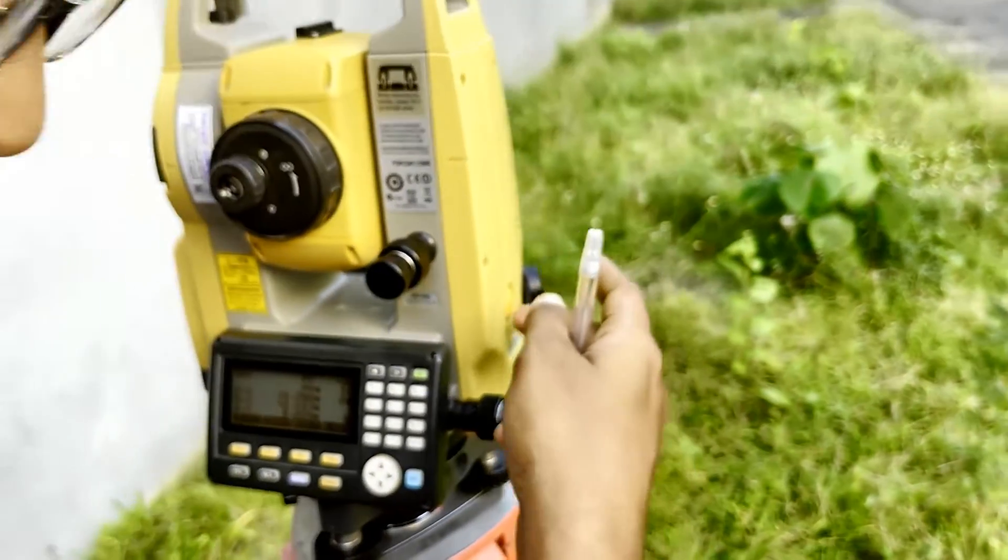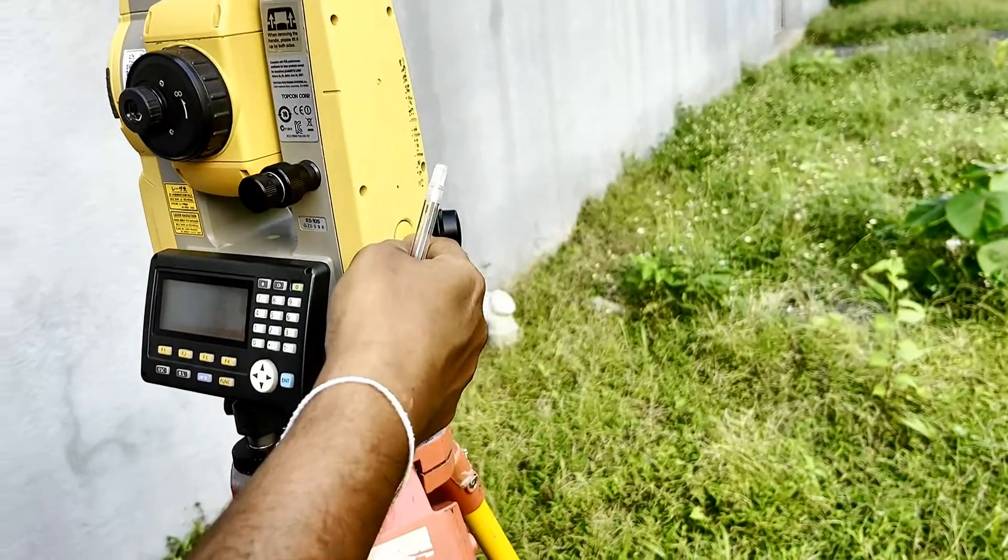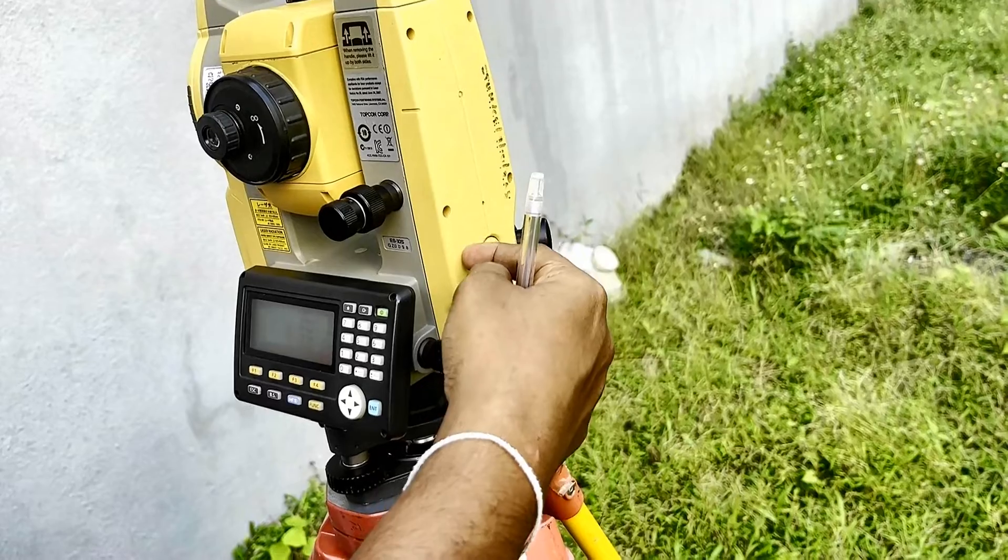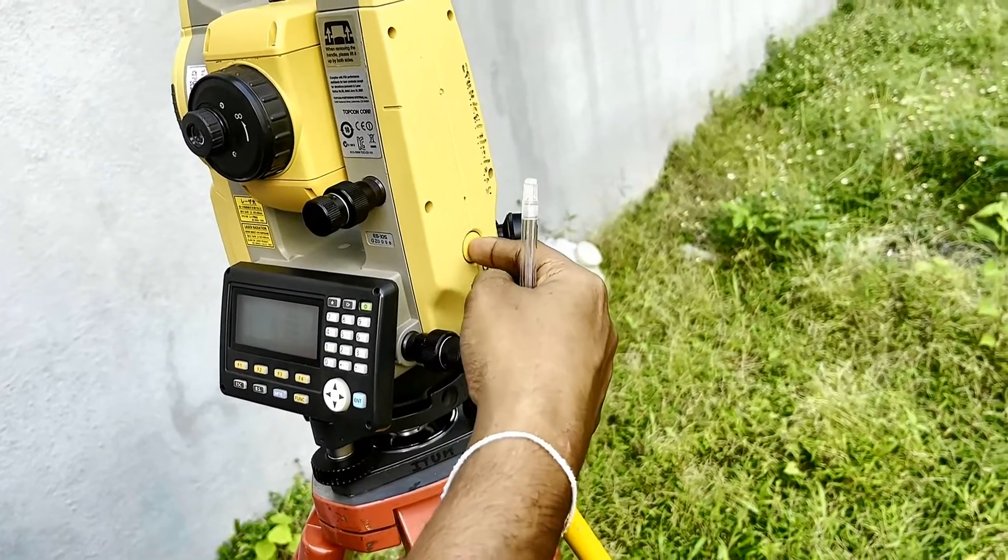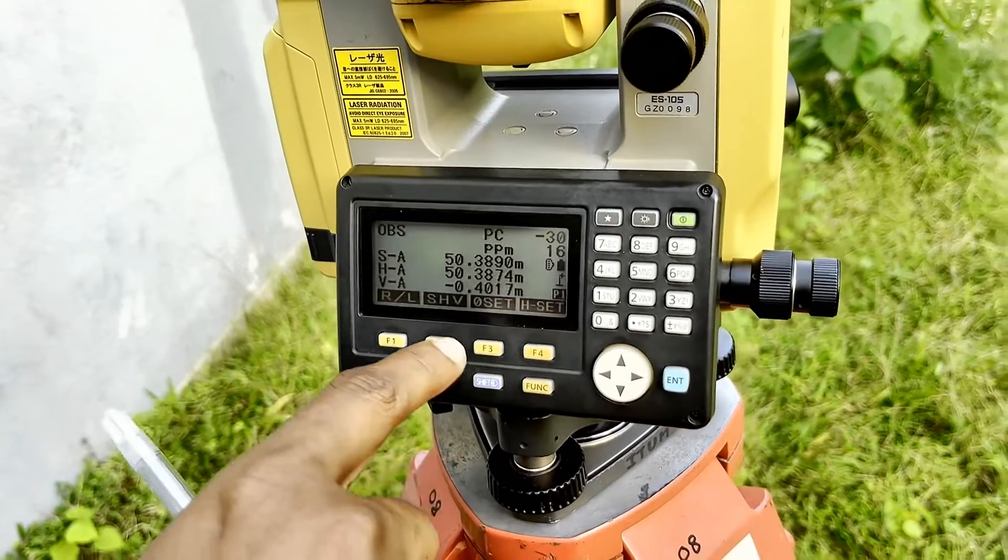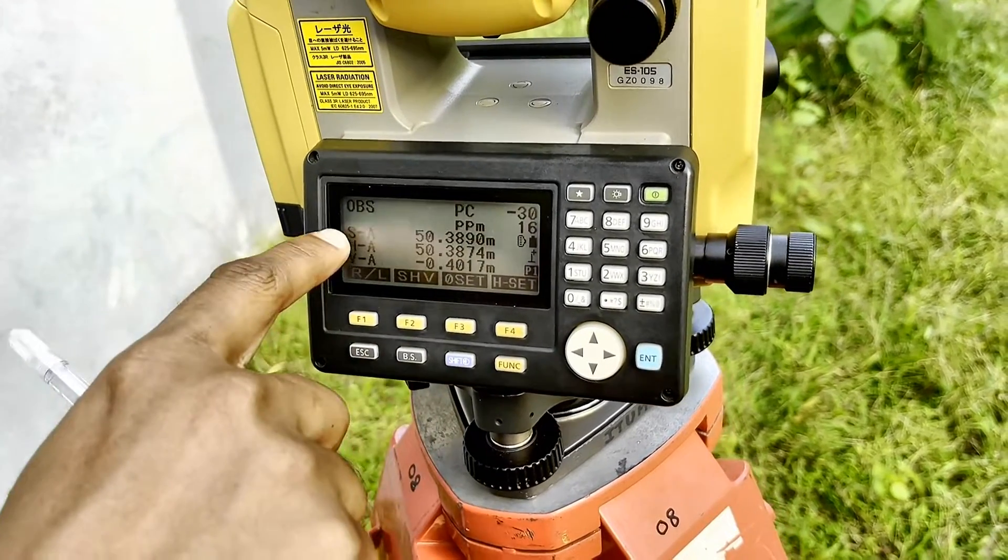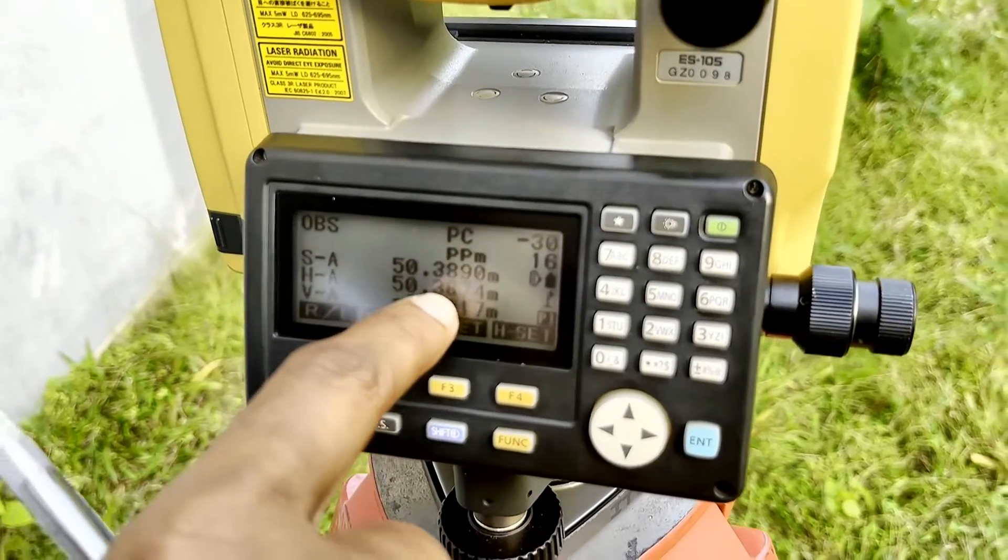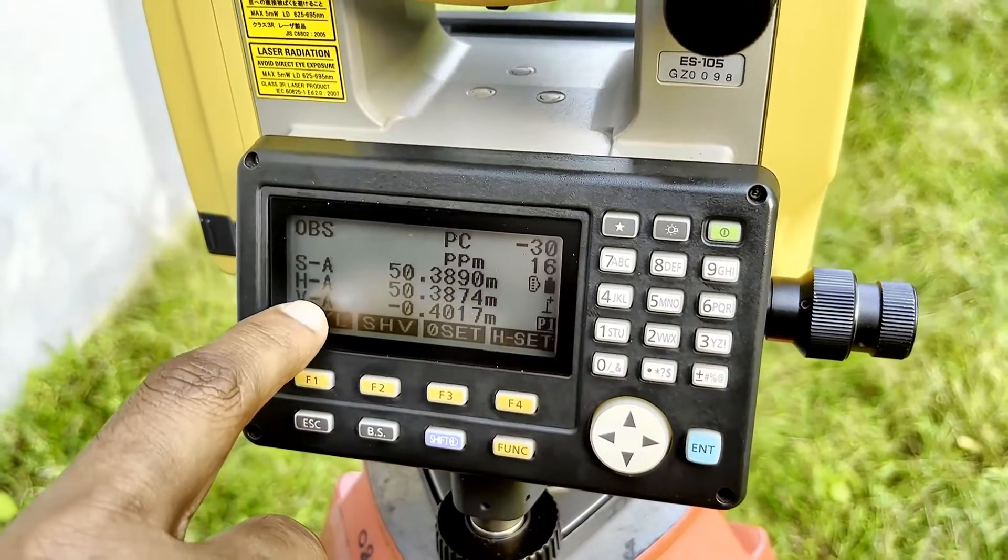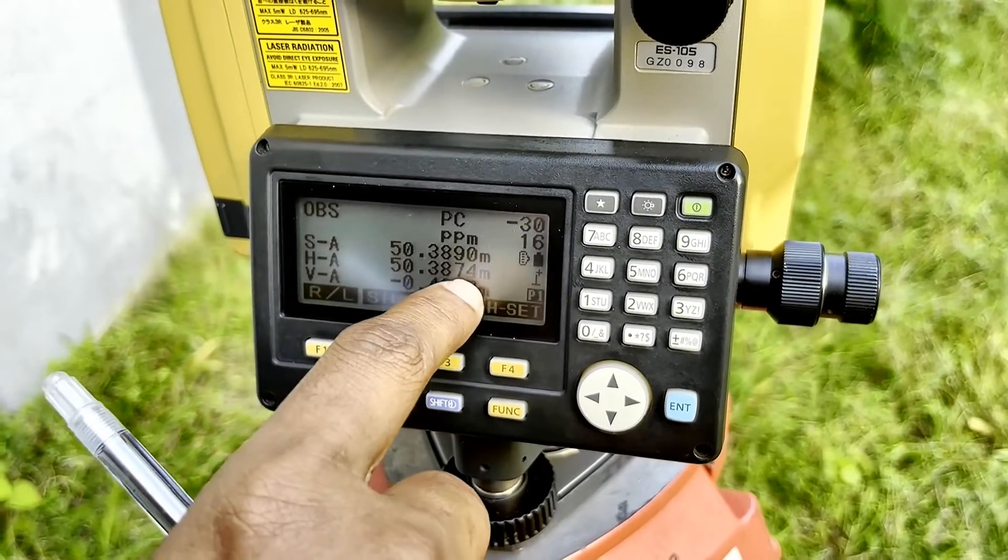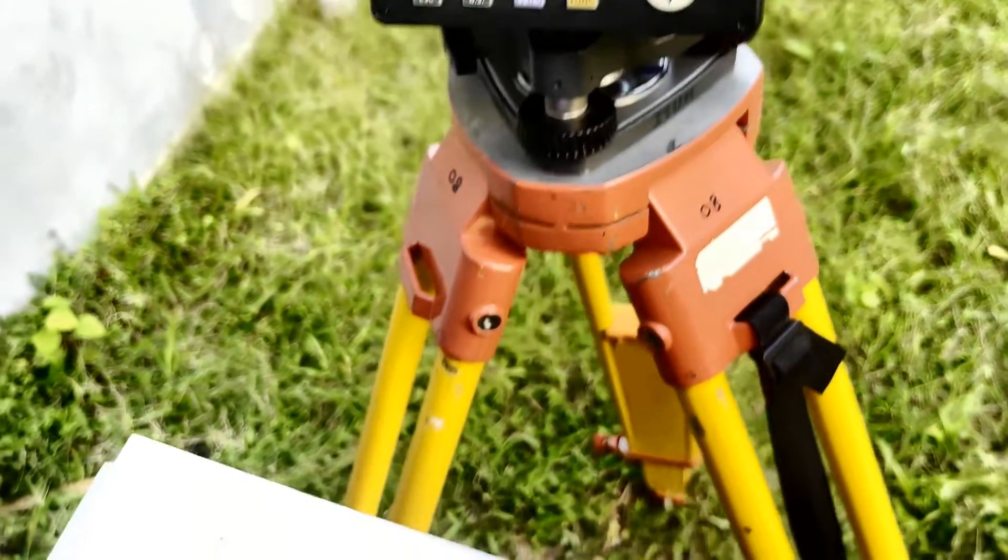And now, I need to measure the distance. For that, I can use measure option here. If there is measure, I'll try to find out measure here. But measure is not there. In that case, I can use this button. This is called the toggle key. If I press this button in this total station, this is called Topcon model. If I press this one, automatically the distance will come. Now, you see the SA, the slope distance is 50.389 meters. The horizontal distance is 50.387 meters. Vertical difference is 0.4017 meters.